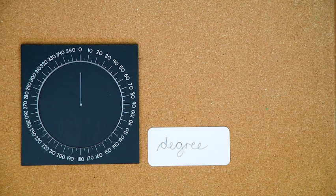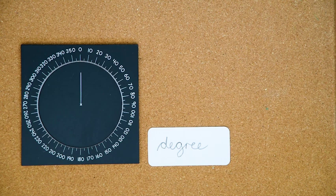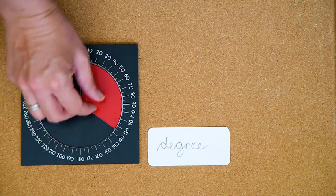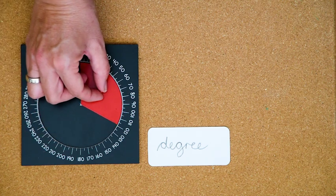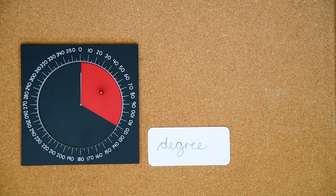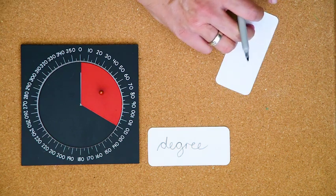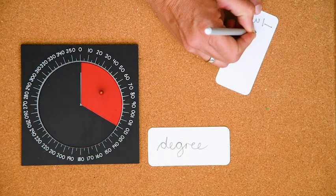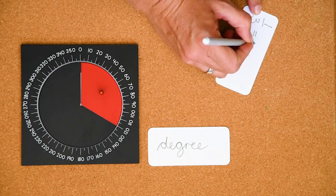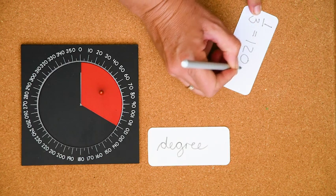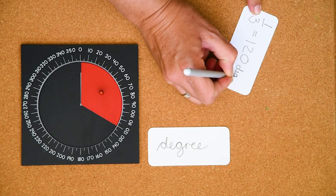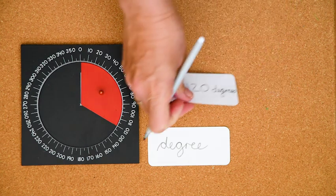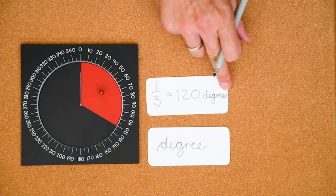A complete angle is 360. Now if we wanted to write down how many degrees 1 third was, we could write 1 third equals 120. Oh my goodness. Oh, this is taking so long. 120 degrees.